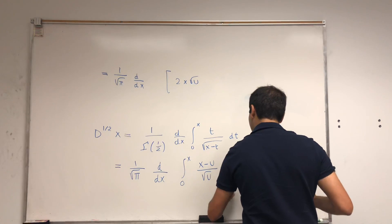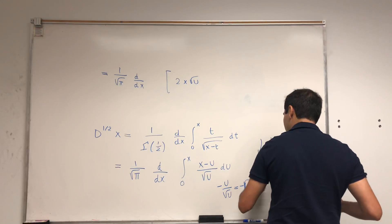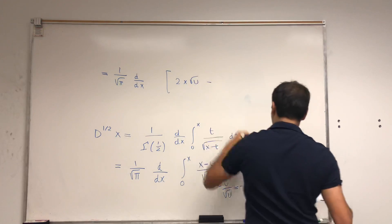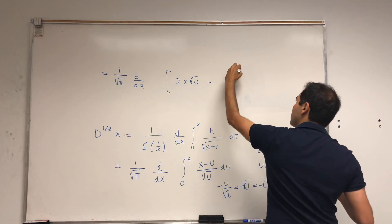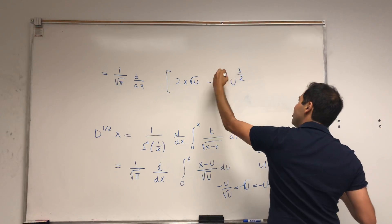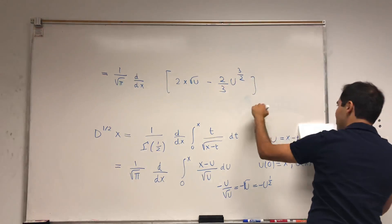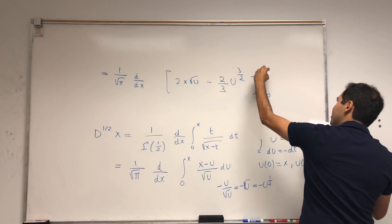And then this one becomes, if you want, minus u over square root of u, which is minus square root of u, which is minus u to the one half. So an antiderivative becomes, u to the one half is u to the three halves, and to remedy this, multiply it by two thirds. And you take this from u equals zero to u equals x.